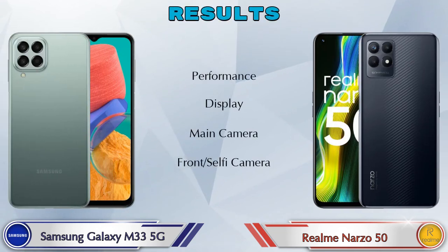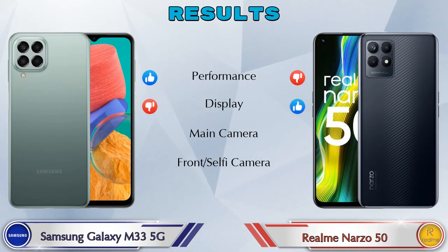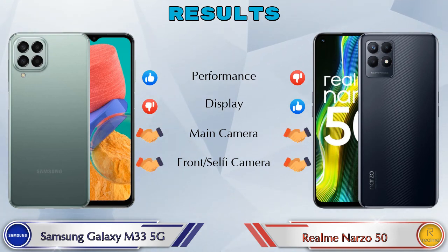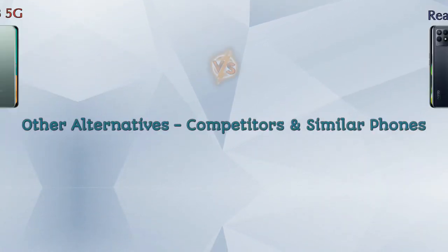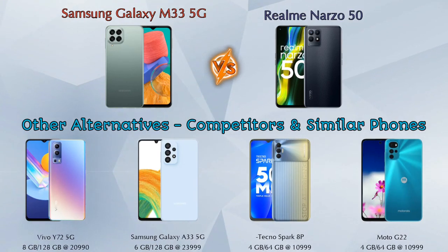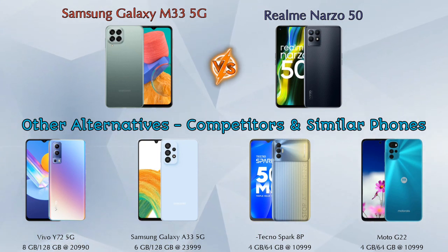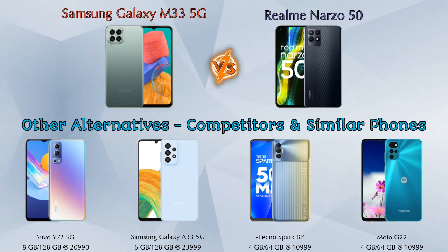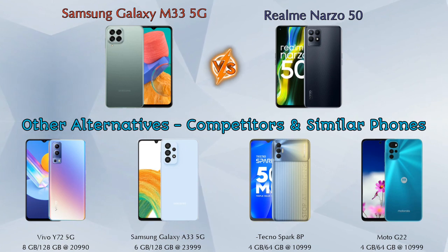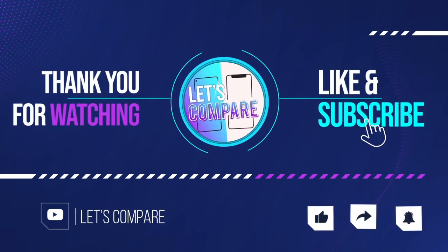Finally, talking about results: in performance, the Galaxy M33 5G is ahead; in display, the Narzo 50 is ahead; in the main camera, the Narzo 50 is ahead; and in the front selfie camera, both phones are the same. Other competitors at the same price include Vivo Y72 5G, Samsung Galaxy A33 5G, Tecno Spark 8 Pro, and Moto G22 4G. Details about all competitor phones are available in the description. If you like our video, please like and subscribe. Thanks for watching.